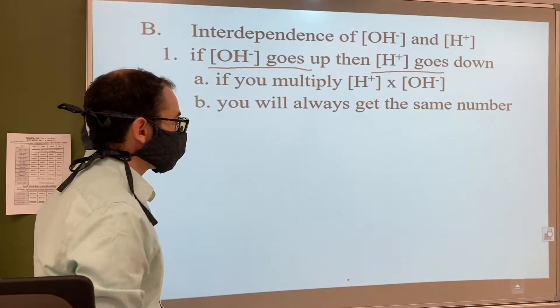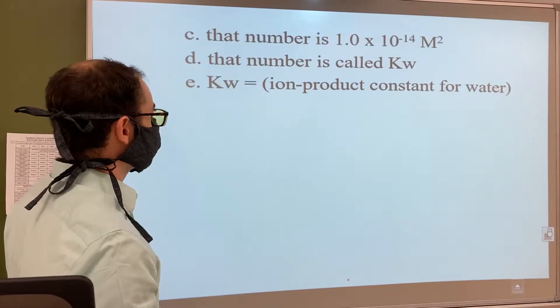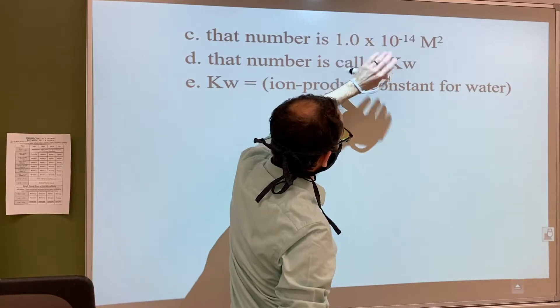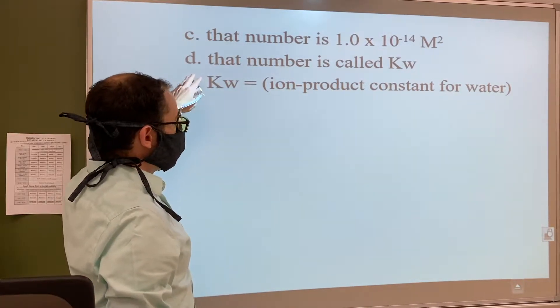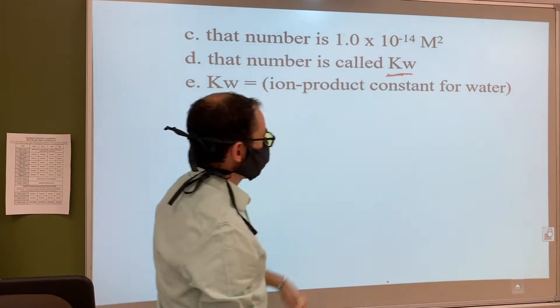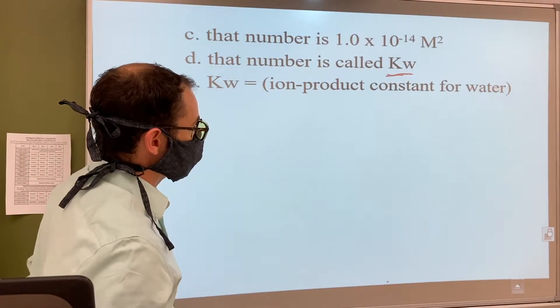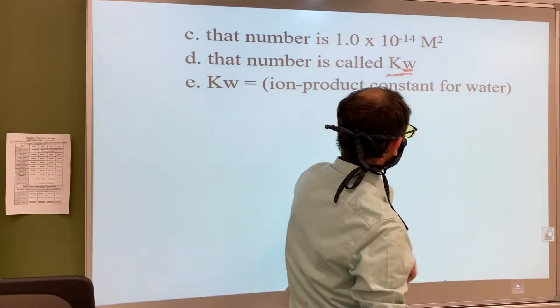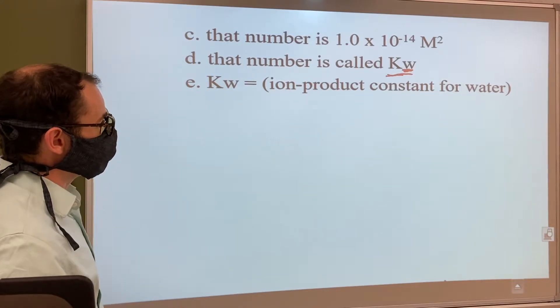That number is 1.0 × 10^-14 M². Since it's a constant, we denote it as Kw. K is constant here and it's the ion product constant for water. That's what the Kw stands for - the W is for water. Now where did they get this number 1.0 × 10^-14? If you remember, these two numbers are what [H+] and [OH-] represent.